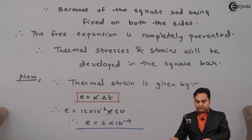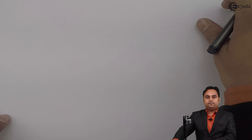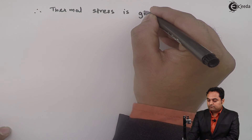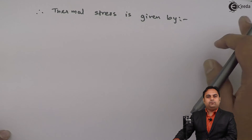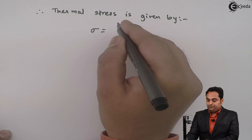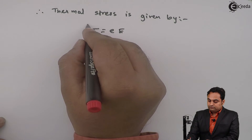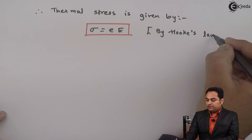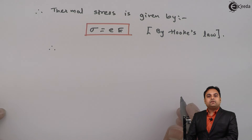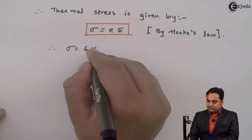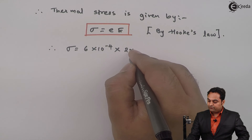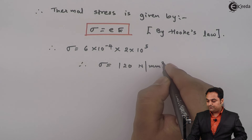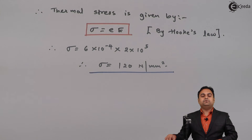After getting the thermal strain, now I will find the thermal stress. By Hooke's law, thermal stress σ = strain × Young's modulus. The thermal strain was 6×10⁻⁴ and Young's modulus is 2×10⁵ N/mm², so the thermal stress σ = 6×10⁻⁴ × 2×10⁵ = 120 N/mm². This is the thermal stress developed in the square rod.